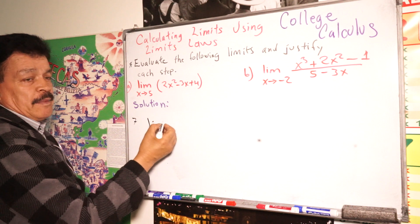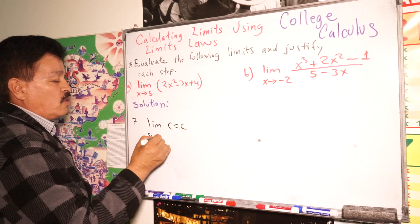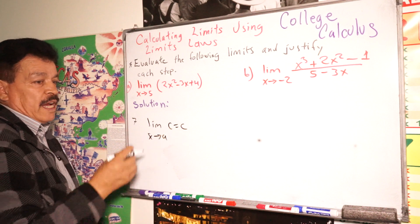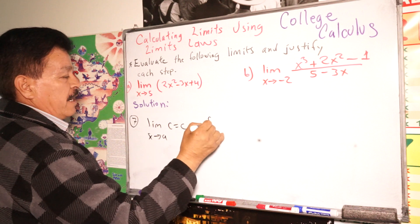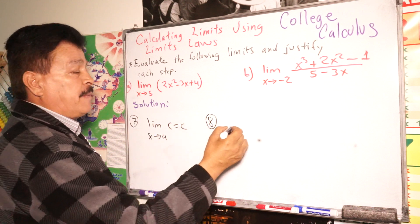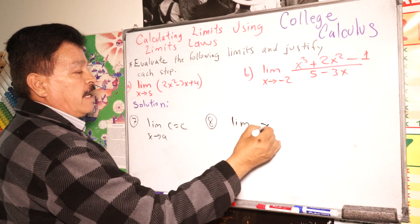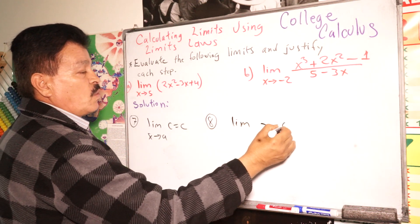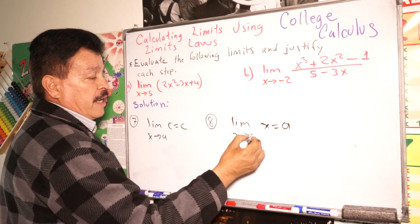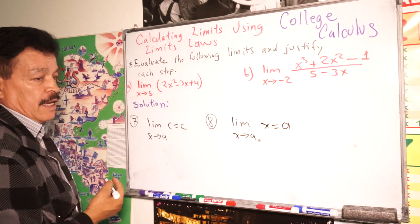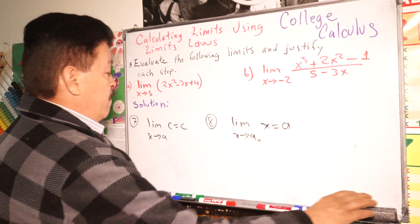Limit law number seven states: the limit of a constant c equals c, as x approaches a. And limit law number eight states: the limit of x equals a, as x approaches a.